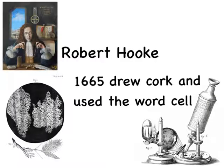The first scientist that was important to the development of the cell theory was named Robert Hooke. Way back in 1665, he made his own microscope and using that microscope, he looked at lots of things. But one of the things that he looked at was the shaving of some cork, which is the bark of a tree.